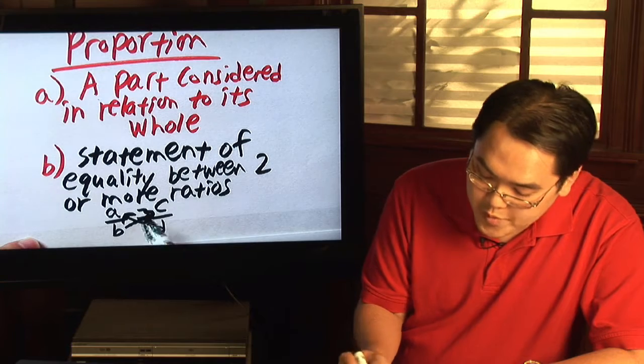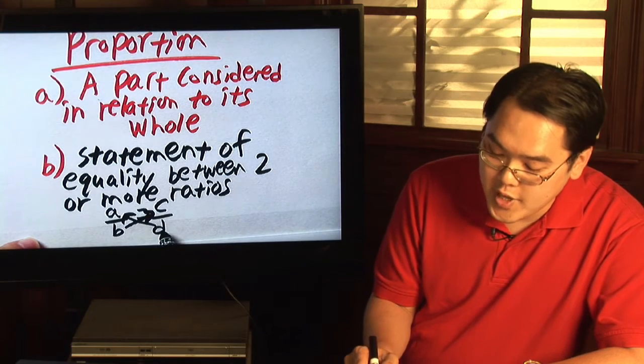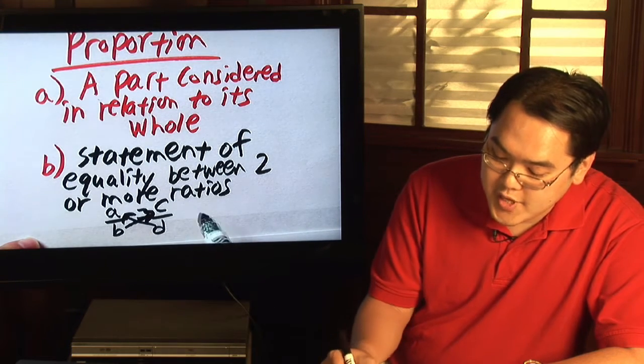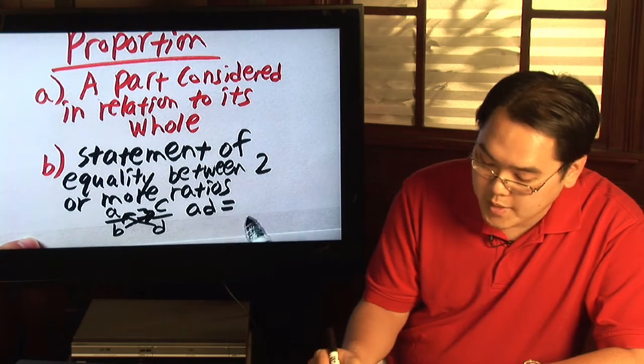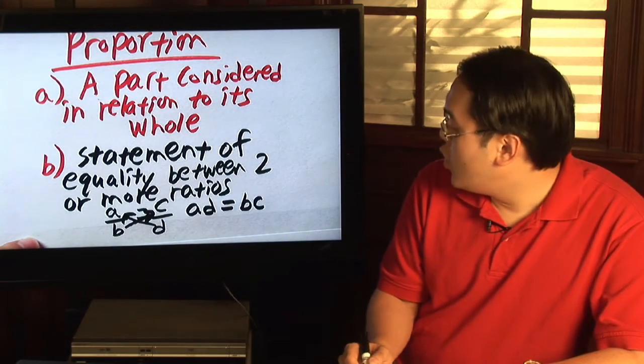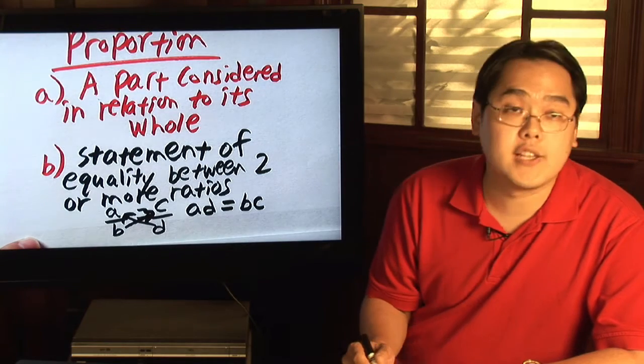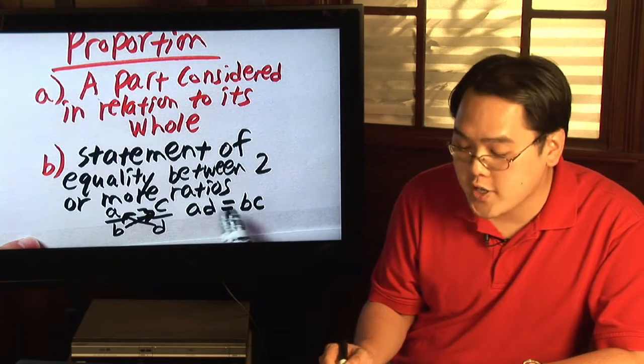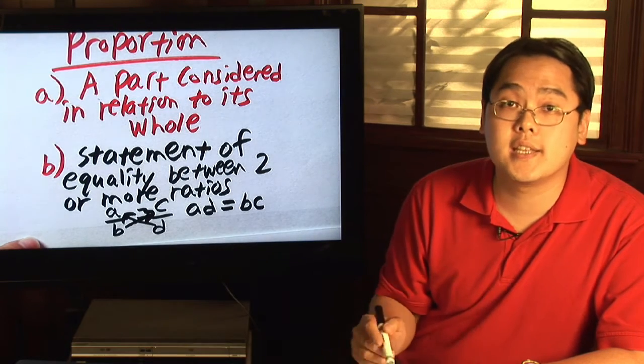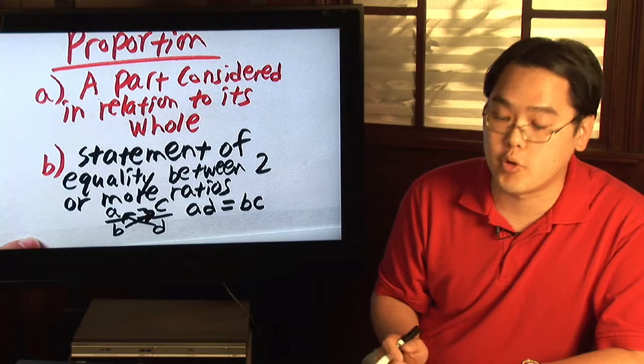if you perform the cross multiplication, the number that you get with d times a, which is ad, equals b times c, which is bc. What this basically tells you as it relates to the definition is for two fractions to be equal, their cross multiplication has to be equal. That is the second, more technical definition of a proportion.